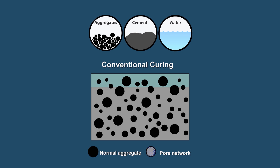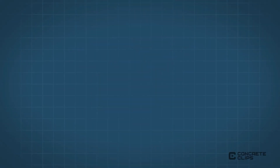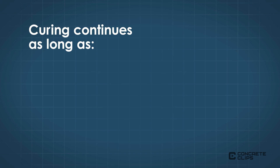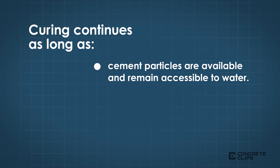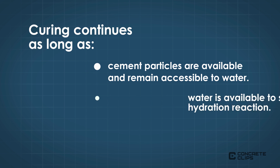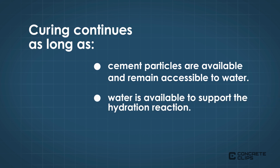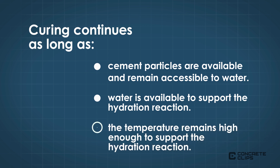As hydration progresses, the concrete strengthens and becomes less permeable. Concrete curing continues as long as cement particles are available and remain accessible to water, water is available to support the hydration reaction, and the temperature remains high enough to support the hydration reaction.